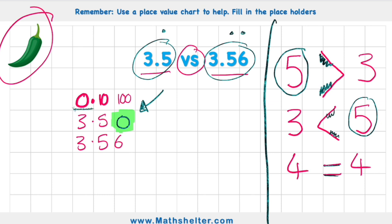So now that we put this placeholder in place, I can clearly see that 3.50 has 50 hundredths, but 3.56 has 56 hundredths. So therefore, 56 hundredths is larger.